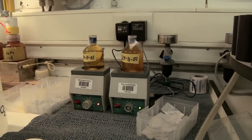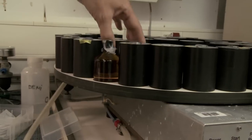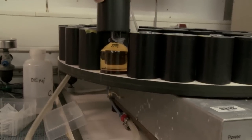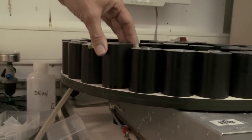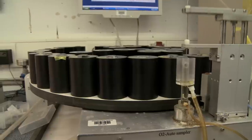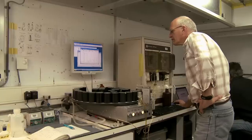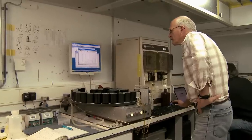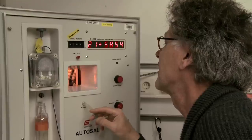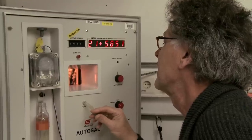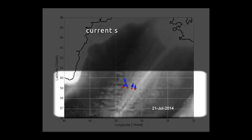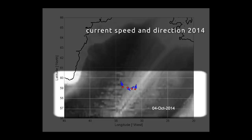The CTD measurements complement the mooring data: with the CTD we get high-resolution vertical data from one location, whereas the mooring arrays give us time series at one location.